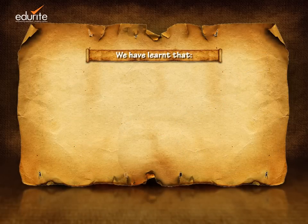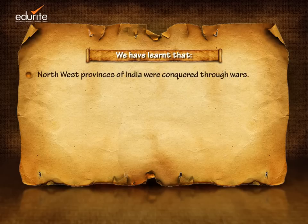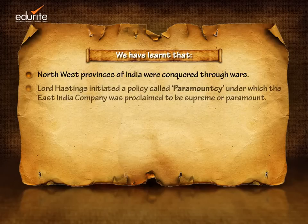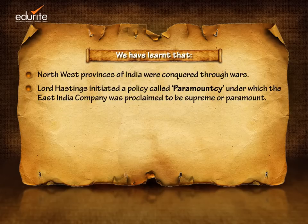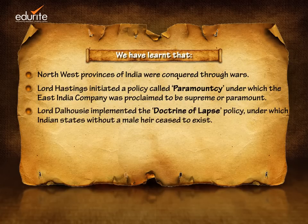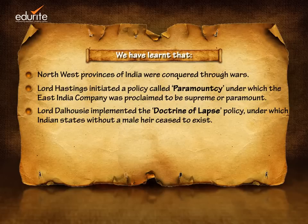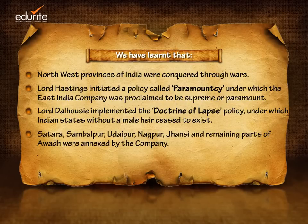We have learned that the northwest provinces of India were conquered through wars. Lord Hastings initiated a policy called Paramountcy under which the East India Company was proclaimed to be supreme or paramount. Lord Dalhousie implemented the Doctrine of Lapse policy under which Indian states without a male heir ceased to exist. Satara, Sambalpur, Udaipur, Nagpur, Jhansi and remaining parts of Awadh were annexed by the company.